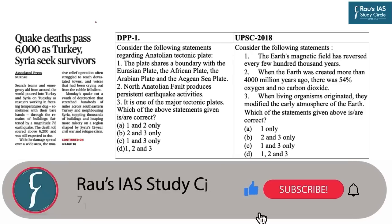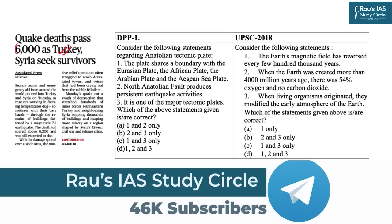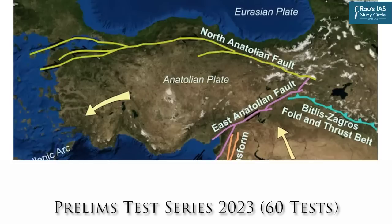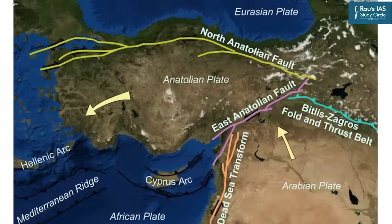Our first question has been framed out of the context of the recent severe earthquake which hit Turkey. Around 6,000 to 8,000 deaths have been reported so far and the counting is still in progression. As discussed in the last DNS also, there are certain minor plates interacting within themselves and a huge fault boundary is created at the northernmost part of the Anatolian plate, which has increased the vulnerability of this particular region.